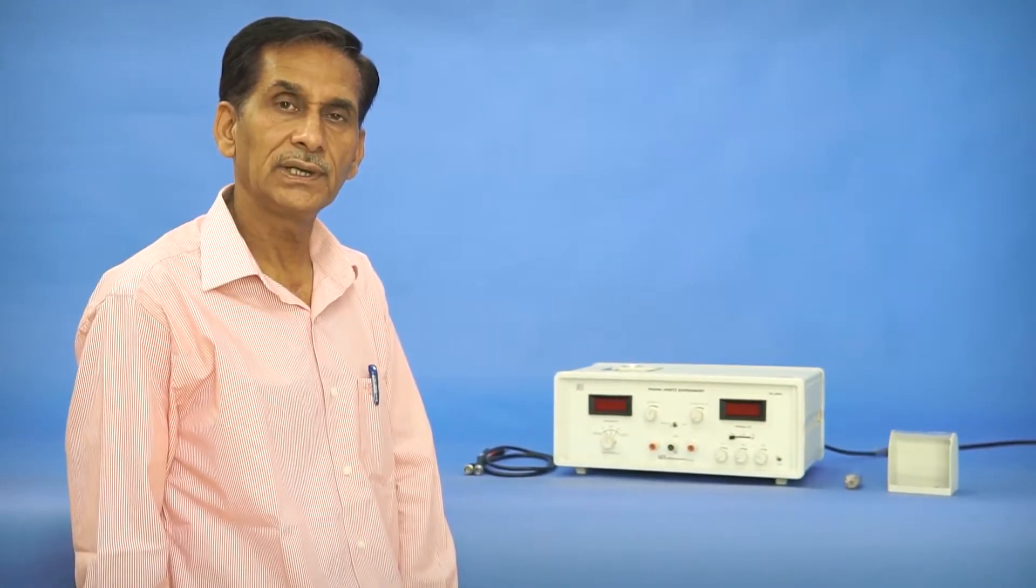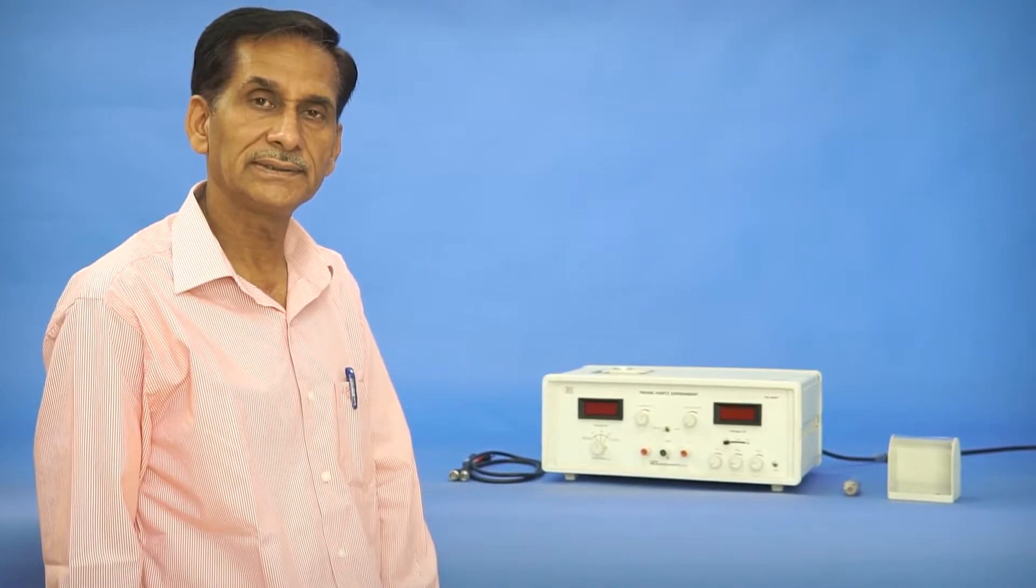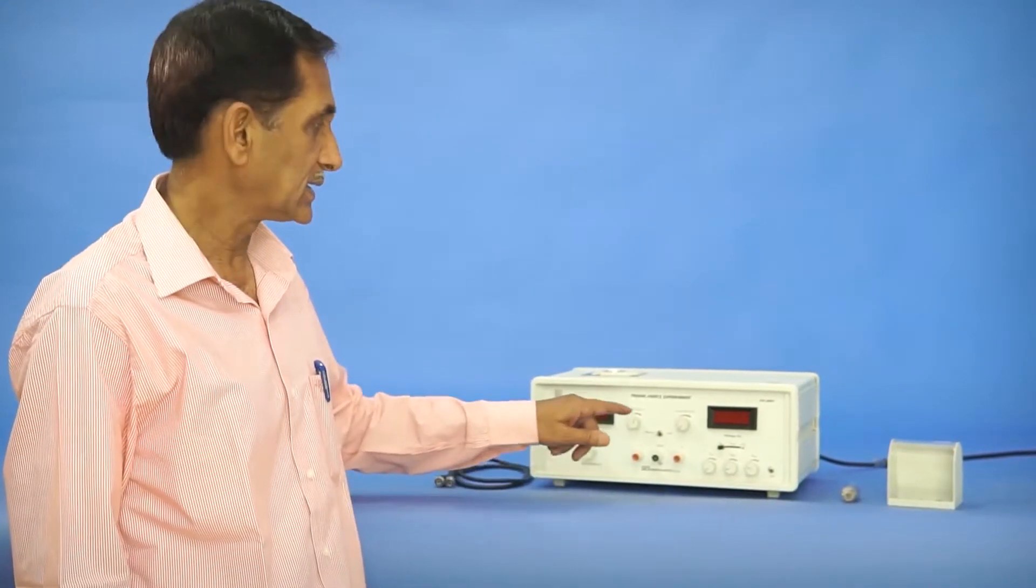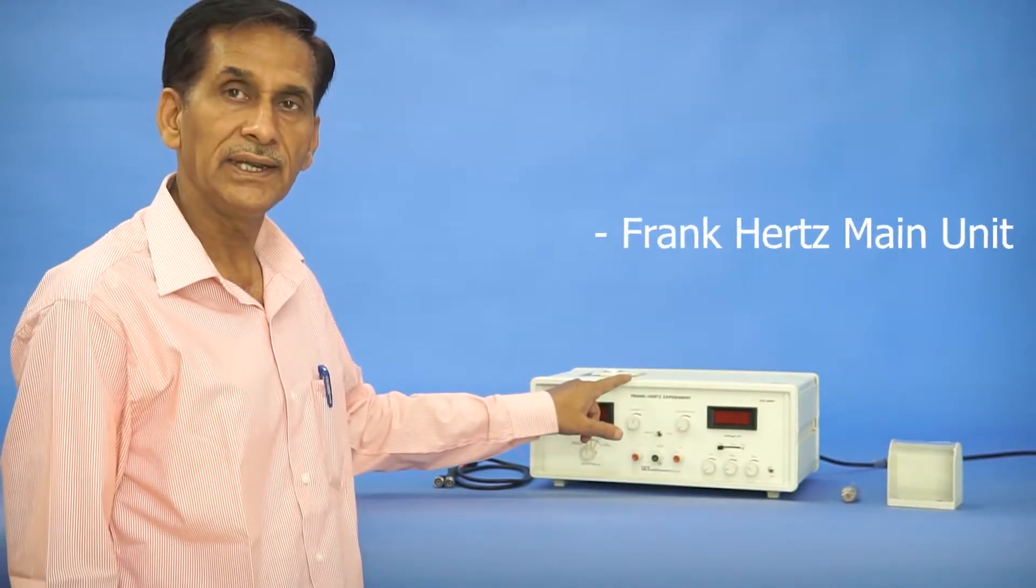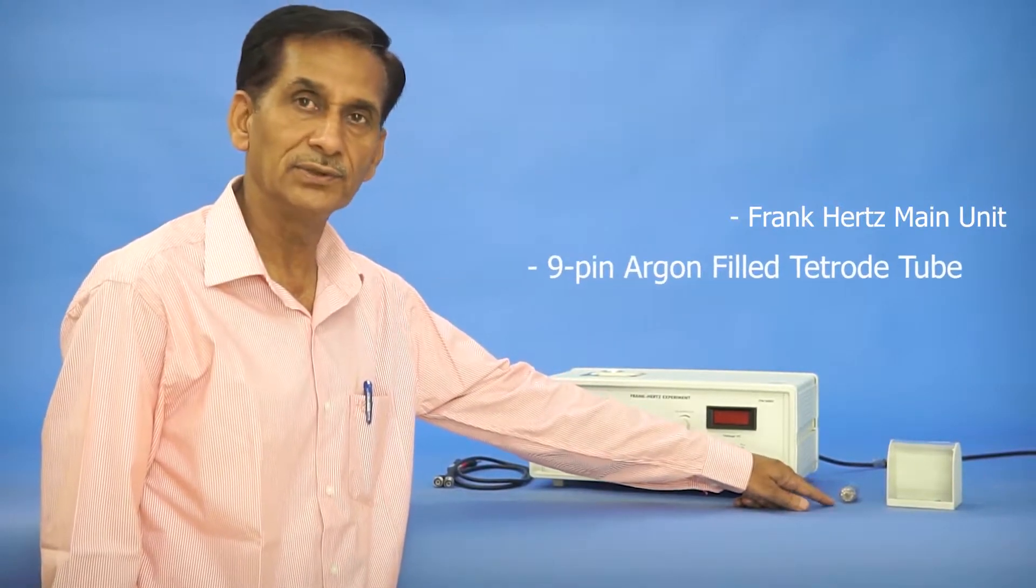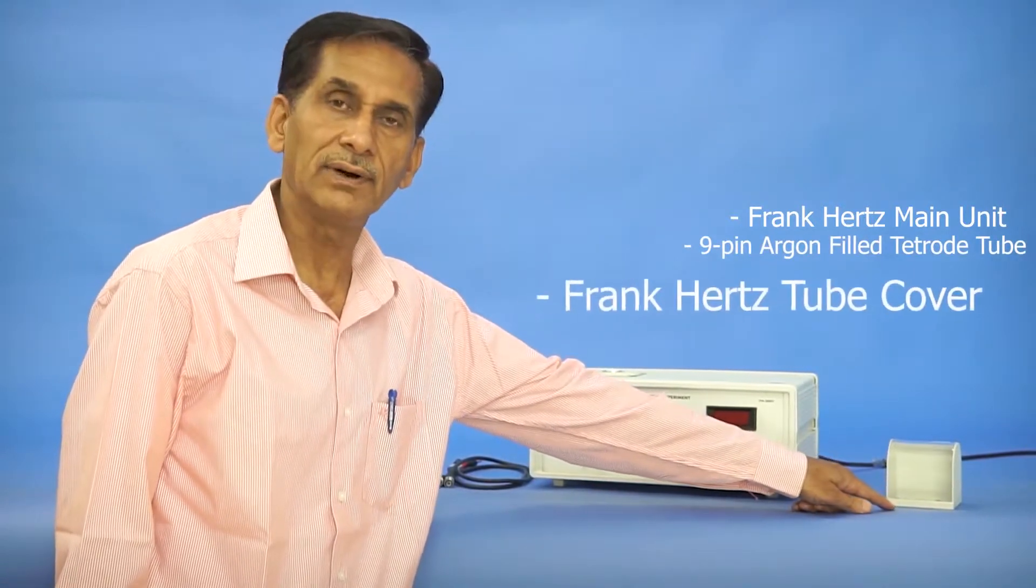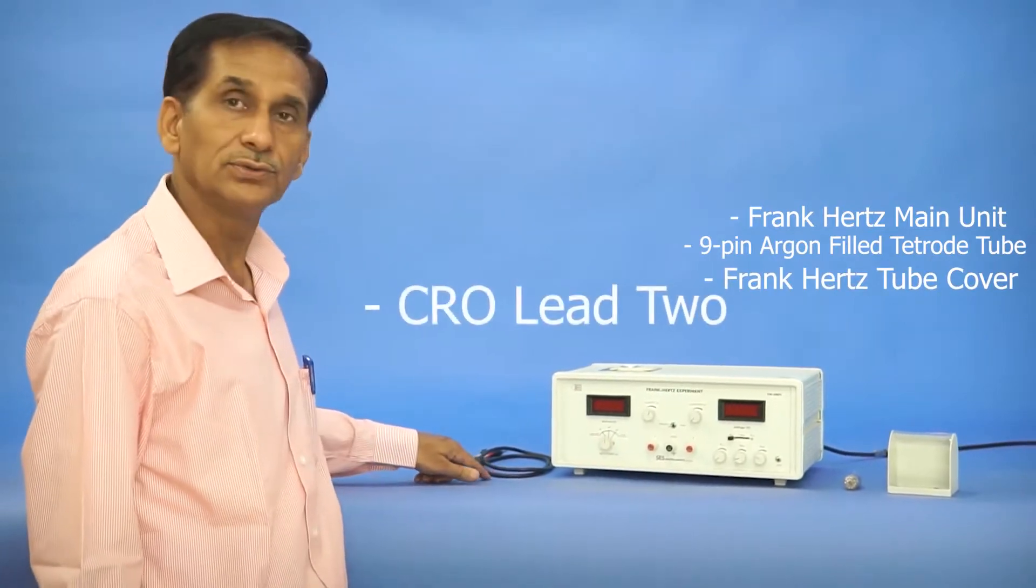When you unpack the instrument, you will get four parts of the complete setup. One is the main unit, second is the 9-pin glass tube, third is the cover, and fourth part is the two leads.